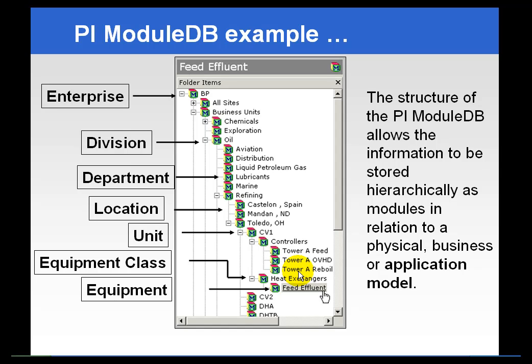This brings us back around to ACE, in that ACE uses the same sort of hierarchy and the same sort of information in its calculations. You can develop one calculation — not using a tag name per se for the input — but by using an alias or a context, you can apply that same calculation across many different modules through a few simple point-and-clicks with the mouse, as opposed to developing individual calculations, compiling them, registering them, and scheduling them. So PI ACE can use the PI Module Database to automate or propagate its calculations across many different areas and layers of the organization.